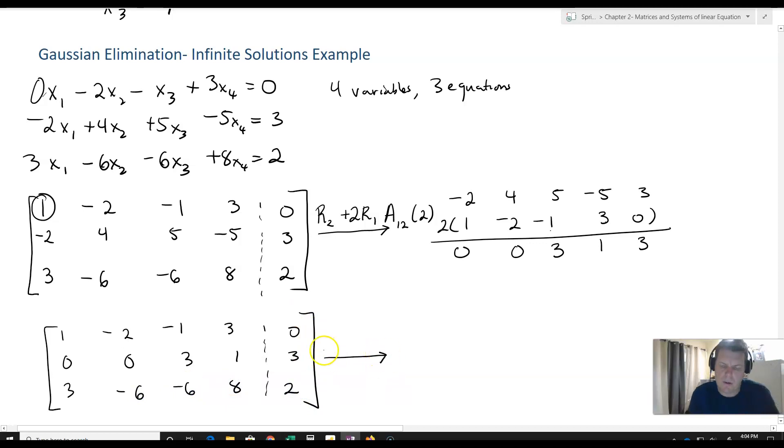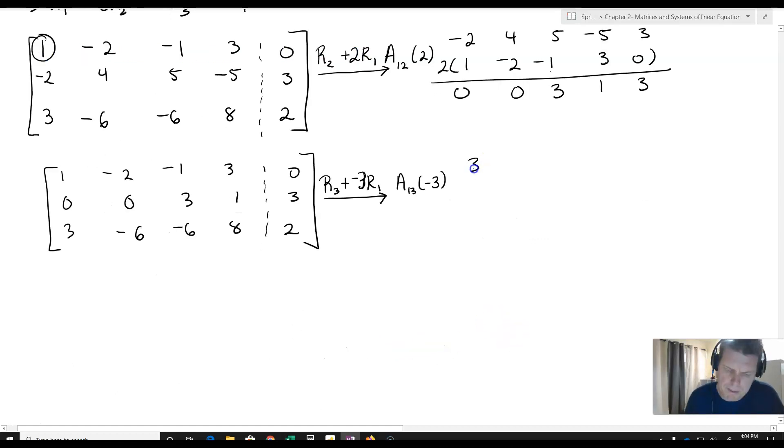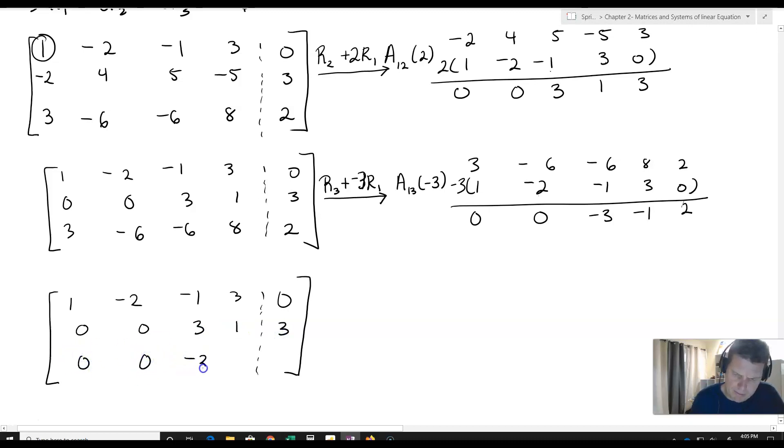Next, I'll take row 3 and add negative 3 times row 1. So 3, -6, -6, 8, 2 plus negative 3 times (1, -2, -1, 3, 0) gives me 0, 0, -3, -1, 2. My new matrix is now [1, -2, -1, 3, 0; 0, 0, 3, 1, 3; 0, 0, -3, -1, 2].